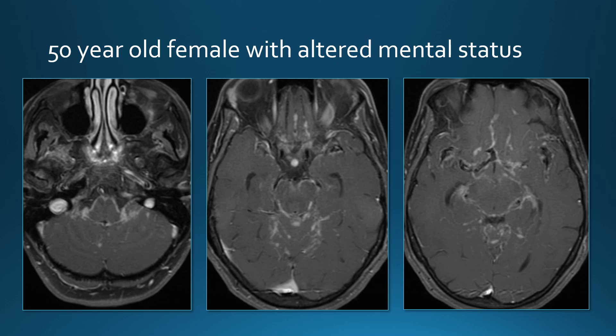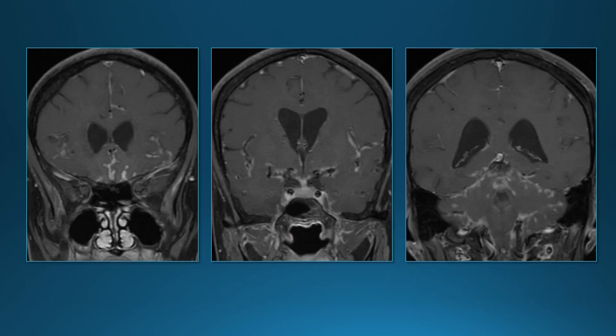A 50-year-old woman with altered mental status also has extensive leptomeningeal enhancement — seen along the brain stem, within the cerebellar folia, along the midbrain and basal cisterns. On coronal images, we see leptomeningeal enhancement along the optic chiasm and pituitary stalk. This is a patient with sarcoid.